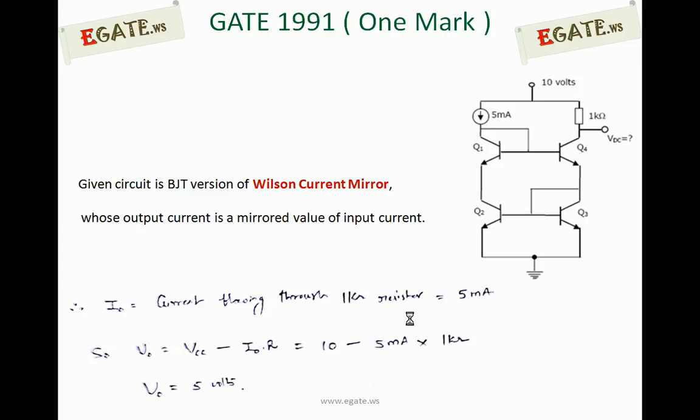The given circuit is a BJT version of Wilson current mirror.